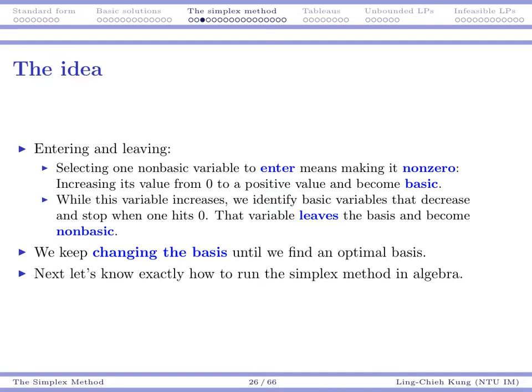And then with that variable increases, we should identify basic variables that will decrease and make sure that they do not become negative. Because variables all should be non-negative. So once a basic variable hits zero, we stop. And then we say that particular basic variable leaves the basis and it becomes non-basic. That's how we do a switch.